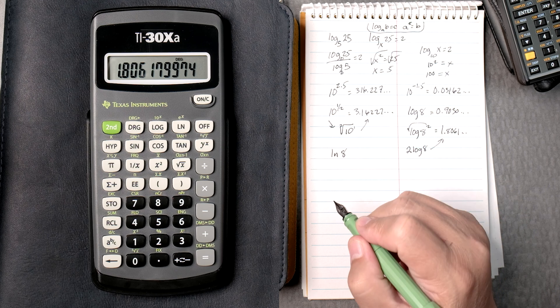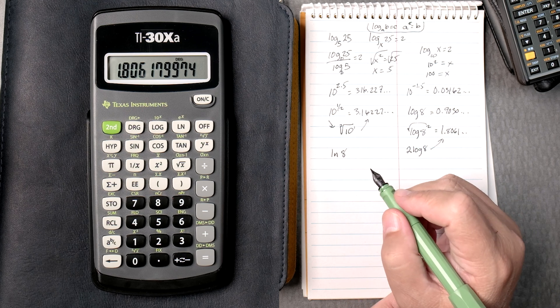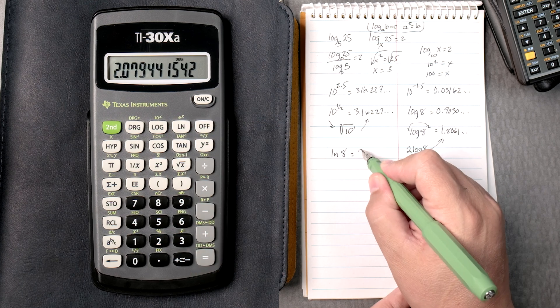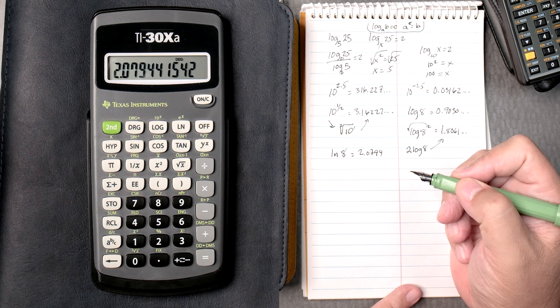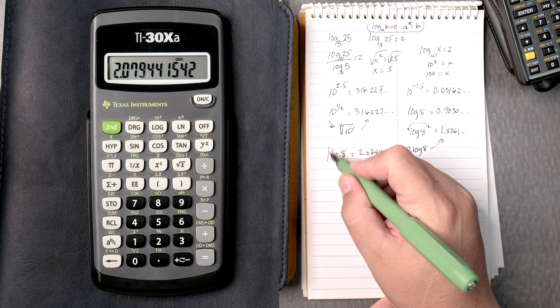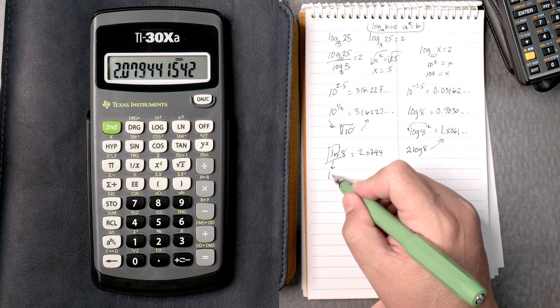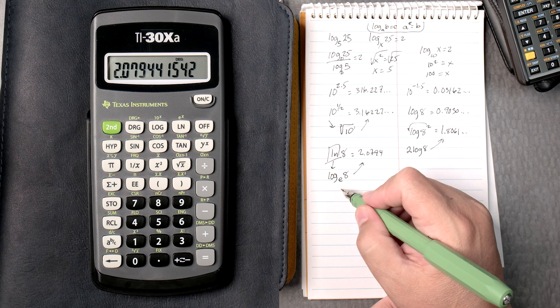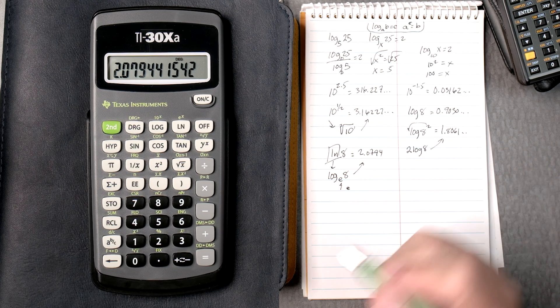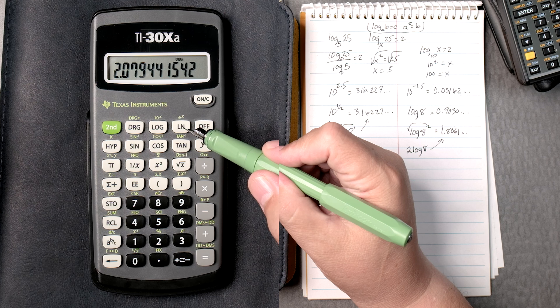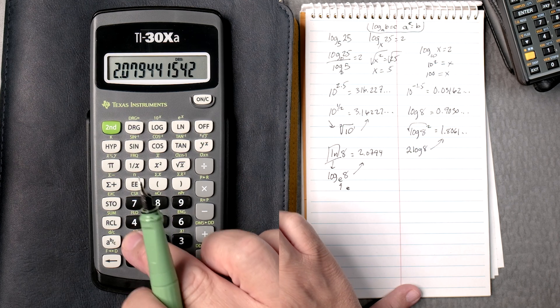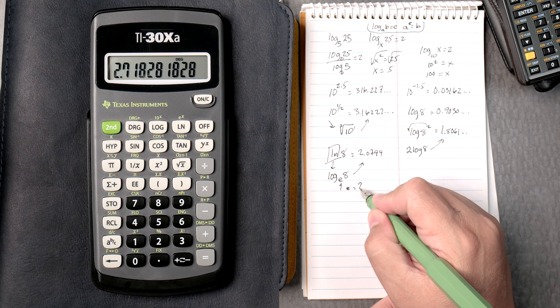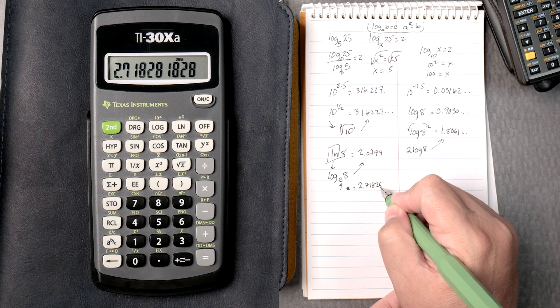Natural log of 8, press 8, natural log, we get 2.0794. Natural log is really the log of base e, 8, which gives you that answer. What is e? Well, to find that out, if you look at the natural log, there's an e to the x. If we type 1, second, log, it gives you e, 2.71828, and so forth.